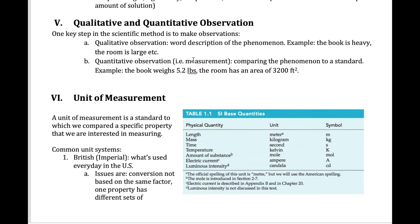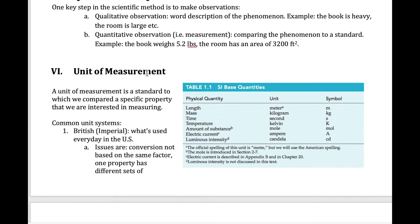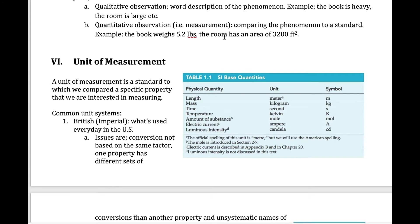Or you can make quantitative observations — another word for this is a measurement. A quantitative observation is making the same observation but comparing that phenomenon to some type of standard. For example, instead of just saying the book is heavy, we would say it weighs 5.2 pounds, comparing it to the standard unit of a pound. When we measure things, we need both a unit and a number.